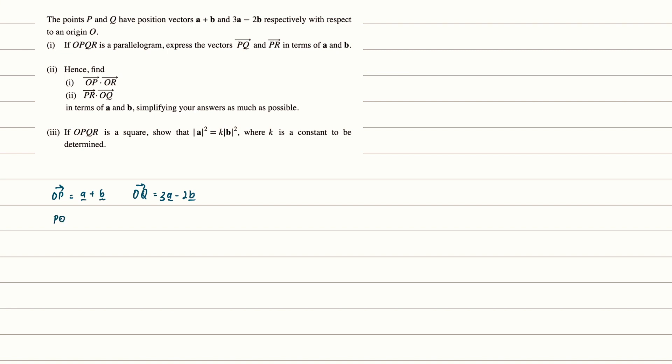Let's find vector PQ first, which equals vector OQ minus vector OP. This gives us 2A minus 3B.